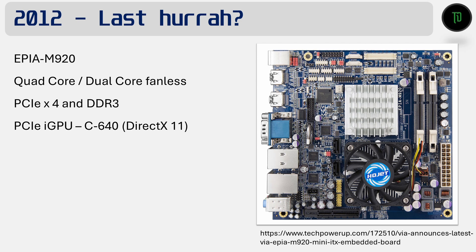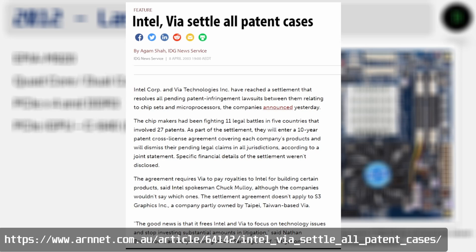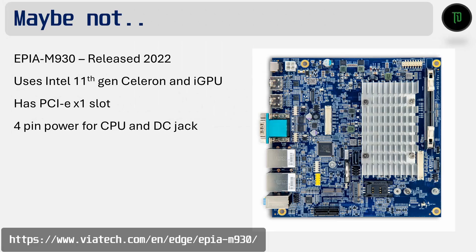VIA sold off a fair bit of its IP and seemed to just roll on with existing inventory, focusing more on the industrial and application market. It also marked the end of the 10-year cross-licence grant that Intel gave them as part of a 2003 settlement of legal disputes between the two parties. This was until October 2022, when the M930 appeared — from what I can tell, it's the first EPIA board without any VIA-based chipset or chips. It's basically an embedded Intel board, which feels like a bit of a full circle moment.